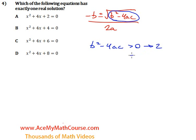If it's equal to zero, there's only one real solution. And if it's less than zero, there are none.